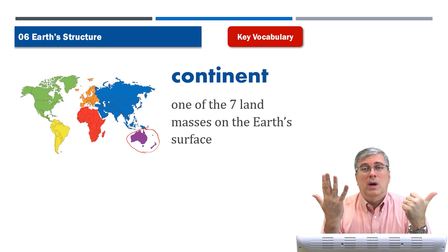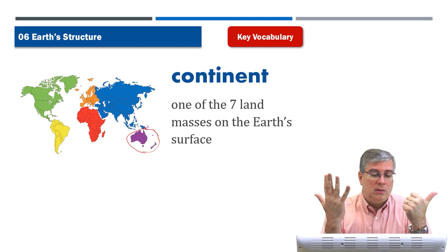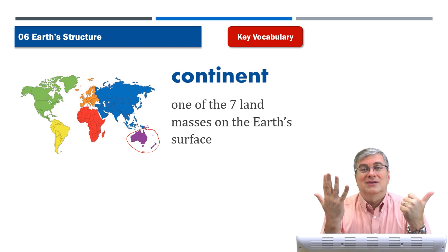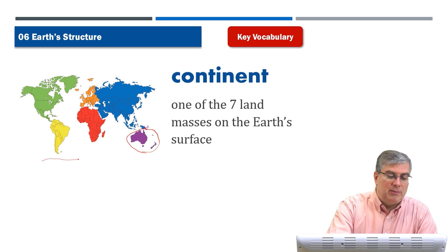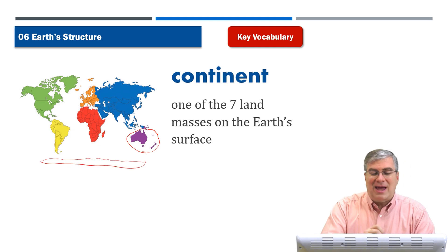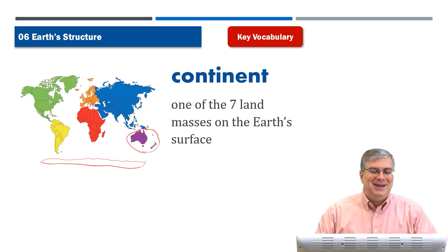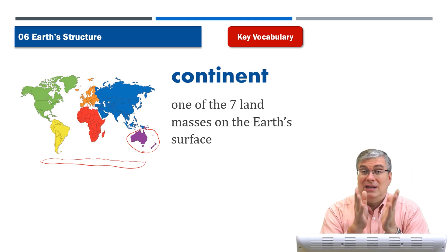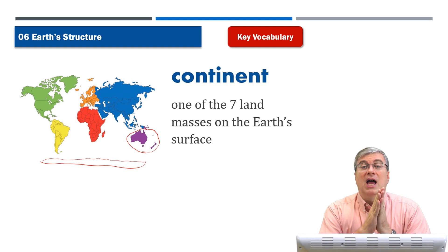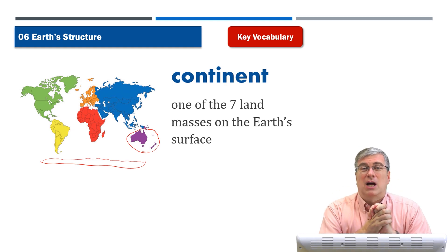We're missing one. Where did it go? Well, it's not on our map — it's on the South Pole. It's called Antarctica. That is another huge landmass that is all along the bottom of your world map. It is a big landmass on the South Pole. And those are seven continents.